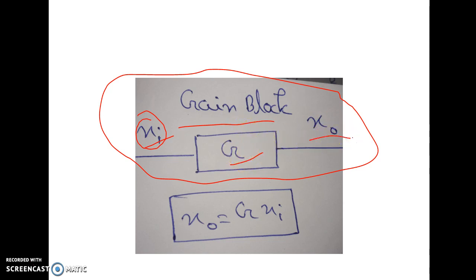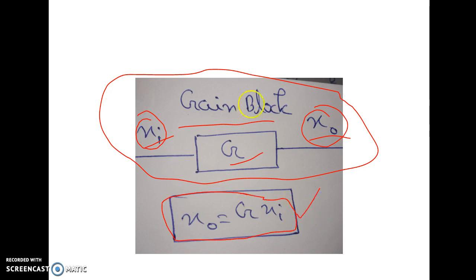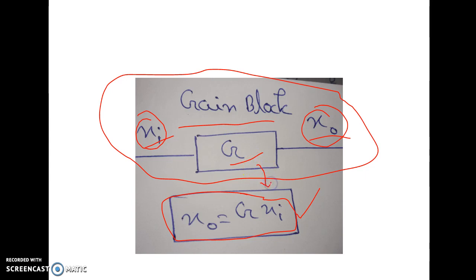And the output is X0. So the output X_out equals G times XI. This is the simple general expression for an amplifier; G is the gain factor. This block is called the gain block — a system where XI is the input and X_out is the output. So X_out equals G times XI; just a simple expression you all know.